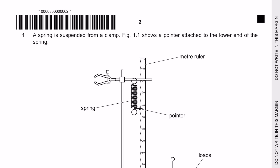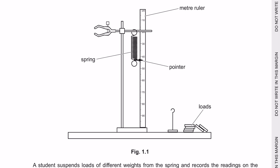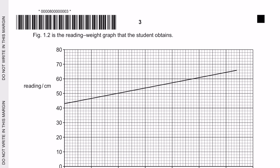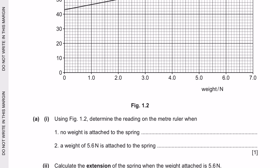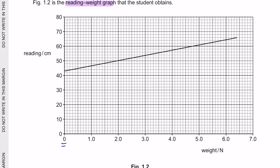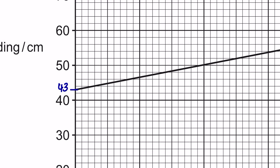Question 1. A spring is suspended from a clamp in figure 1.1, which shows a pointer attached to the lower end of the spring. A student suspends loads of different weights from the spring and records the readings on the meter ruler. Figure 1.2 is the reading-weight graph that the student has obtained. Question A, part 1: using figure 1.2, determine the reading on the meter ruler when no weight is attached to the spring. When no weight is attached, the reading is around 43 cm.